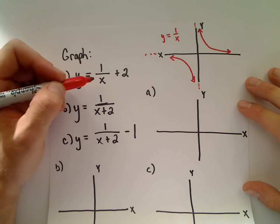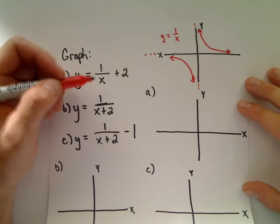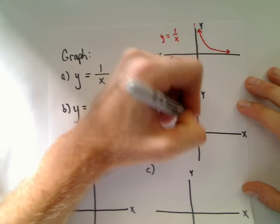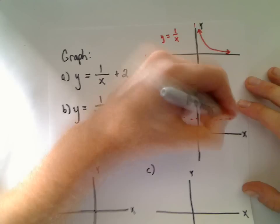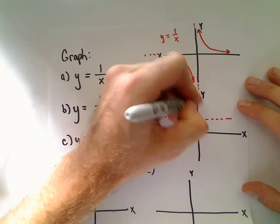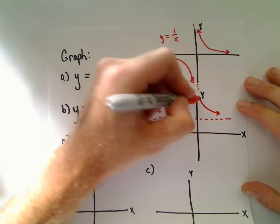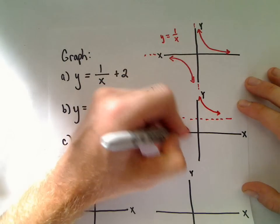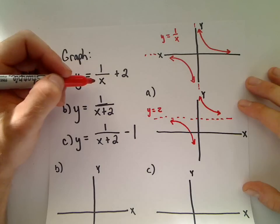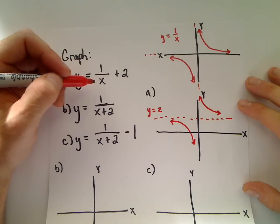For 1/x + 2, this shifts the whole graph up 2 units. The horizontal asymptote that was originally at 0 is now at y = 2. The plus 2 on the outside simply moves the graph up 2 units while maintaining the same basic shape.